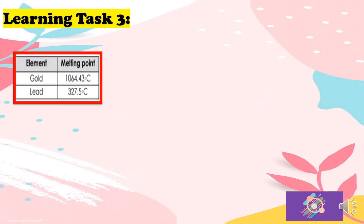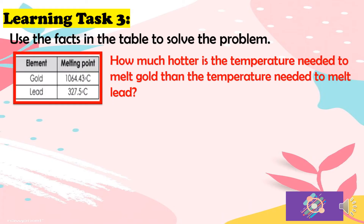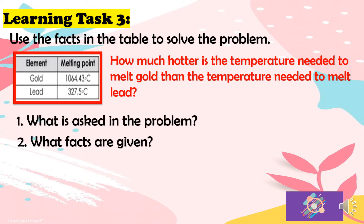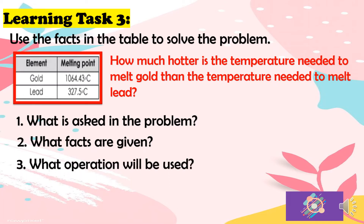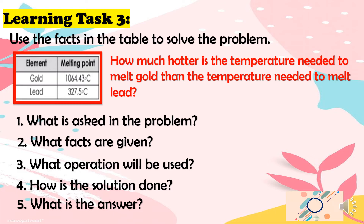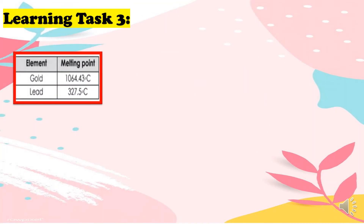For learning task number 3, use the facts in the table to solve the problem. We have two elements: gold and lead. The melting point of gold is 1,064.43 degrees Celsius and the melting point of lead is 327.5 degrees Celsius. The question is: how much hotter is the temperature needed to melt gold than the temperature needed to melt lead? Answer the following: what is asked, what facts are given, what operation will be used, how is the solution done, and what is the answer?